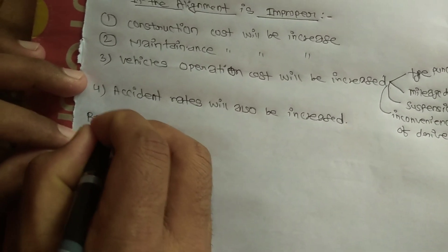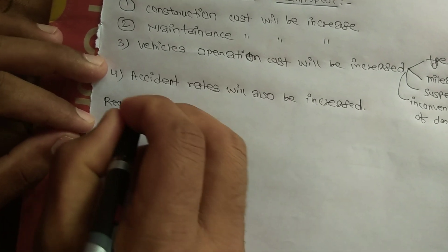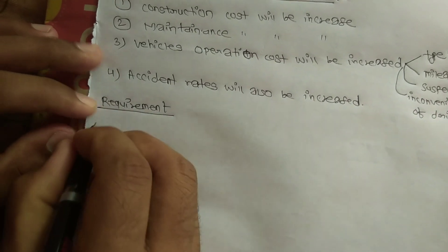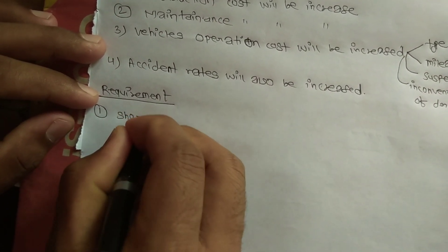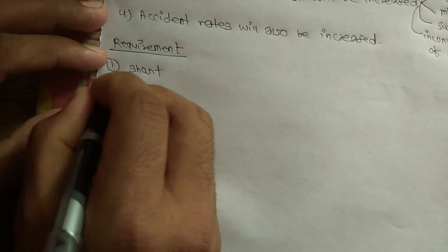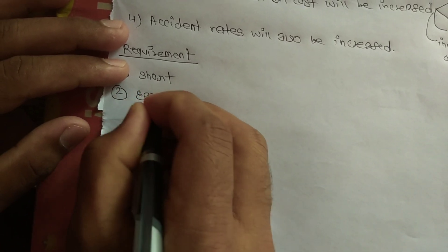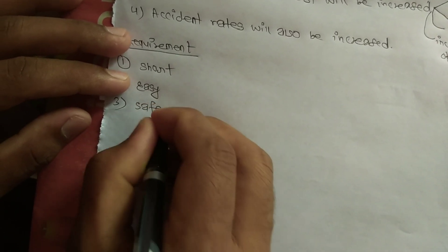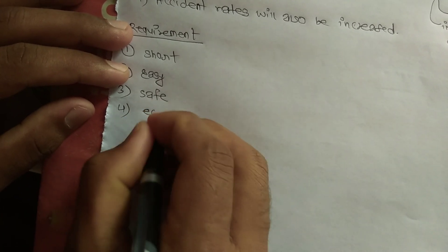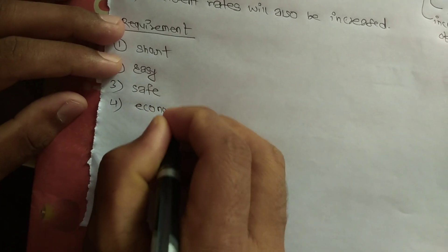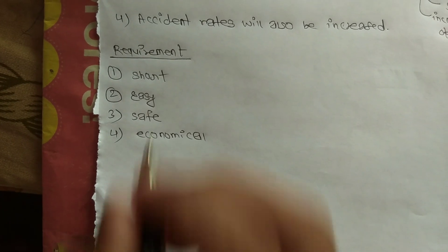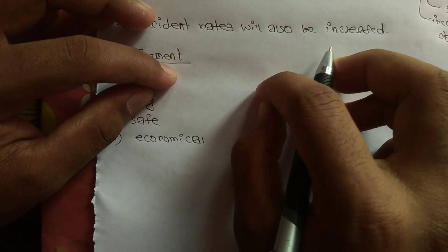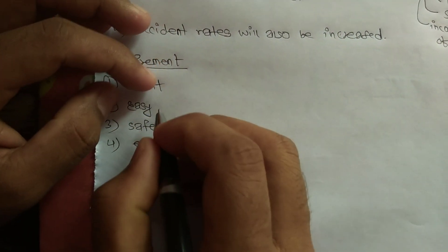So now the next point is the requirements. What are the requirements in highway alignment? The first one is short, the second one is easy, the third one is safe, and the last one is economical.